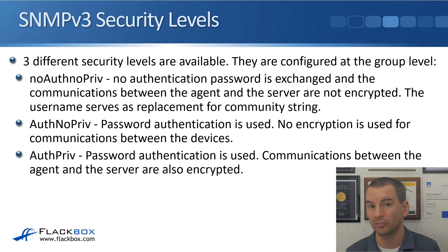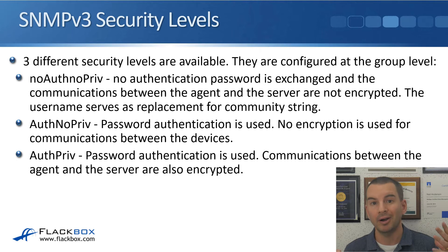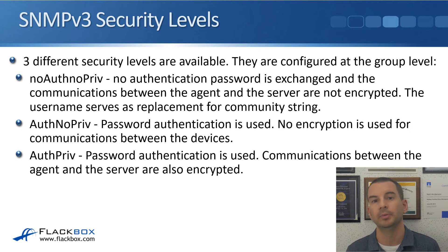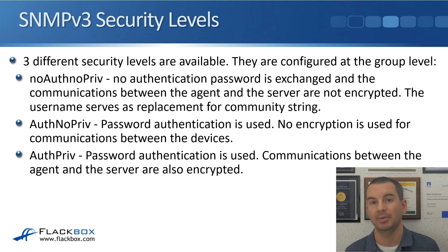The last security level is auth/priv, and this is the one we're most likely going to want to use. With auth/priv, password authentication is used the same as auth/nopriv, but communications between the agent and the server are also encrypted. So the NMS server and the device securely authenticate each other - that does not go in plain text - and also whenever they're sharing information, that is also encrypted. This is the most secure option, and if we're using SNMP version 3 we'll most likely be using auth/priv.